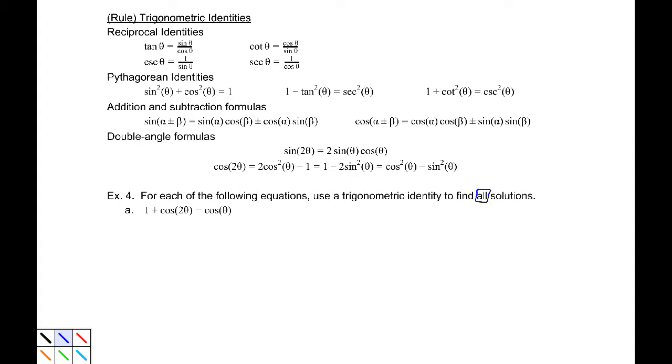1 plus cosine 2 theta equals cosine theta. Here's all the identities we have at the moment, and one of these actually stands out. It is this, cosine 2 theta equals, and we have this right here, equals 2 cosine squared theta minus 1.